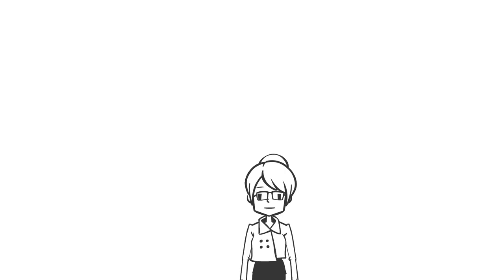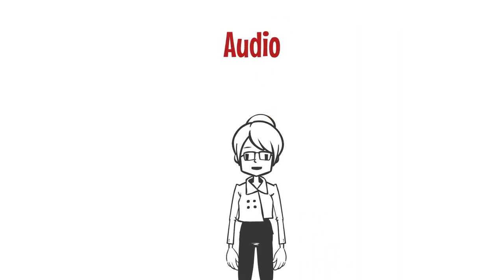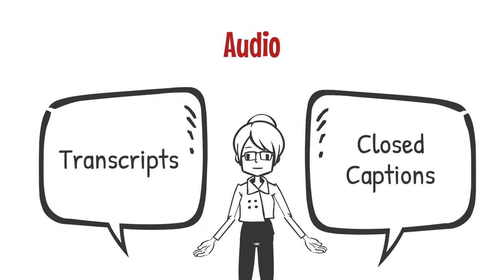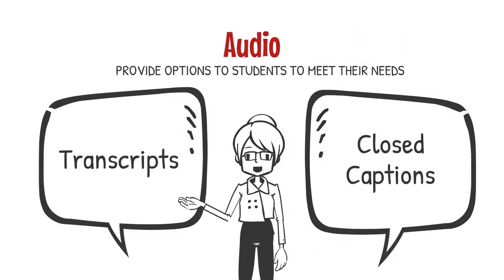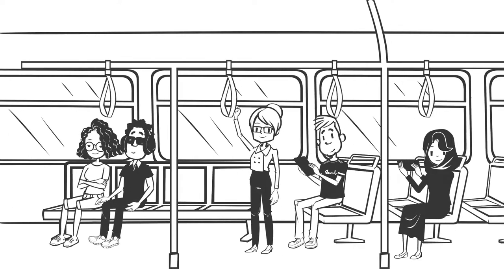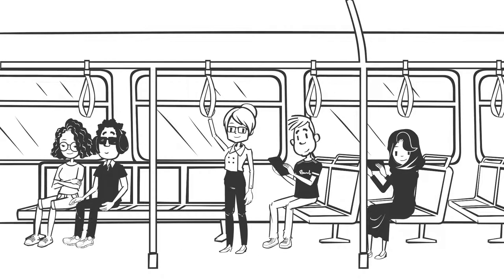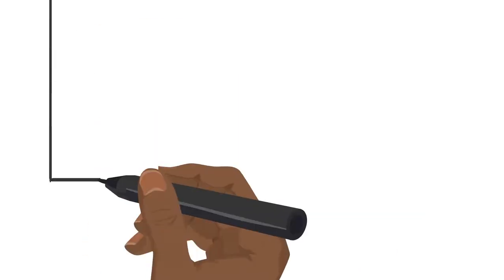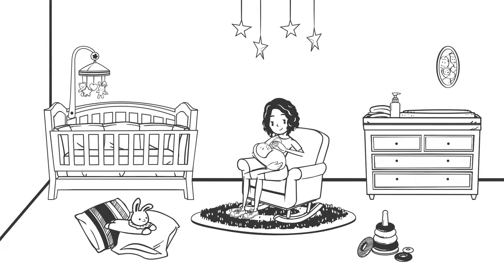There are two common types of text that accompany audio: transcripts and closed captioning. All audio should be accompanied by a transcript, and any audiovisual media requires closed captions. Whether they are listening in a loud or crowded space, are hearing impaired or deaf, or watching with the sound off so they don't disturb sleeping children, many people rely on transcripts and captions.